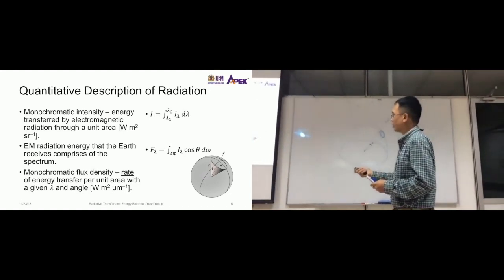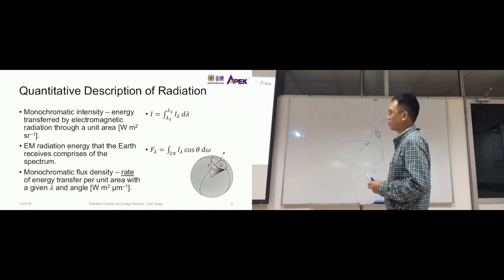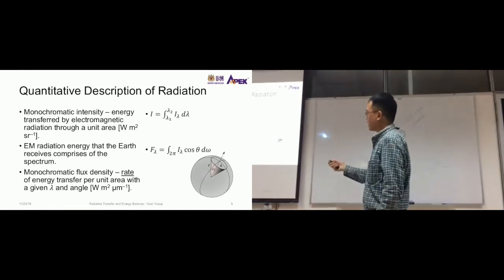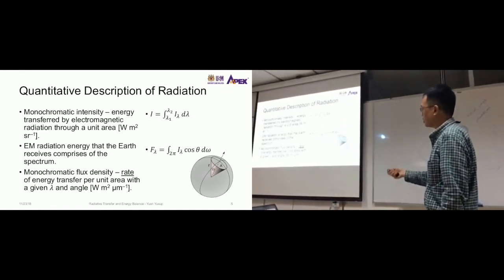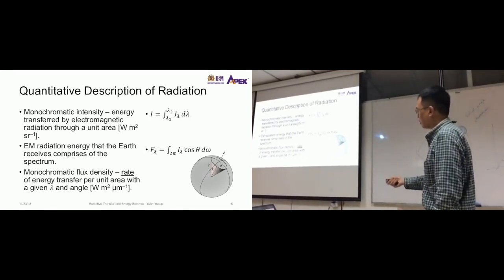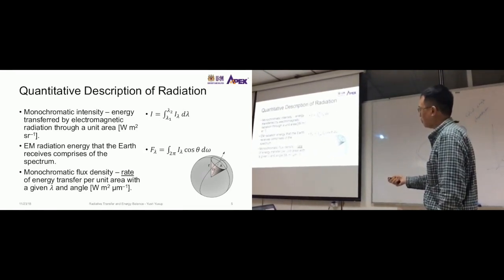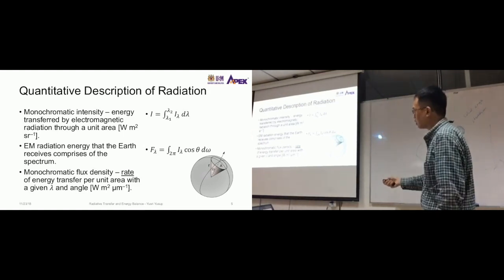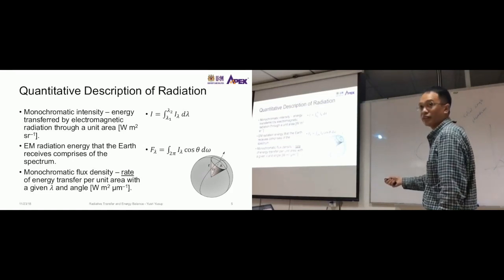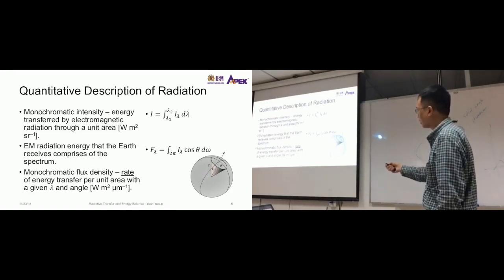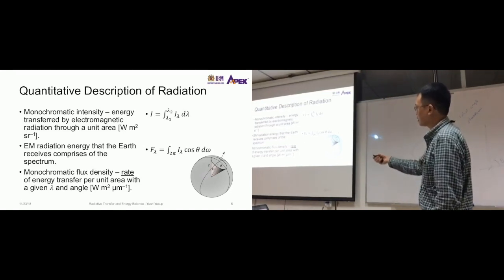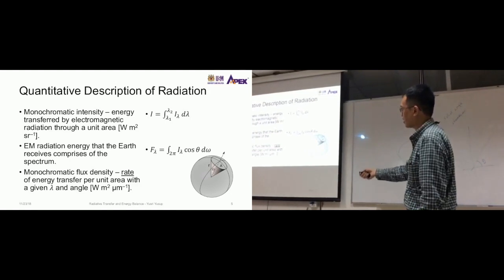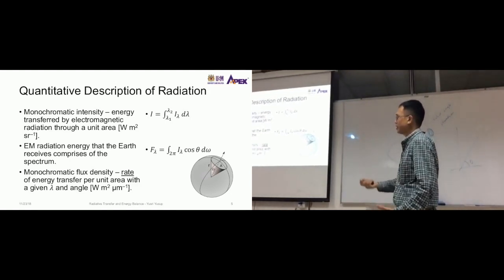Just remember: two pi for the full hemisphere, and omega for the solid angle. The difference between intensity and flux density: intensity I has units of watts per meter squared per steradian — that is, per solid angle. Flux density F has units of watts per meter squared without the steradian, because it's integrated over solid angle for a certain area.